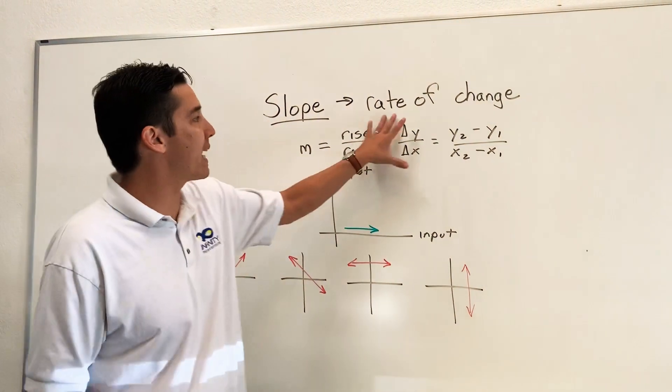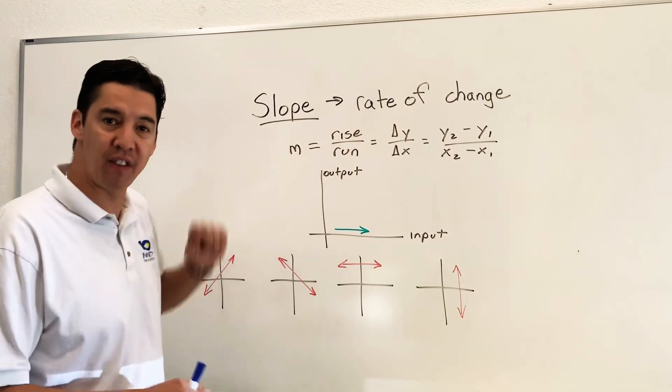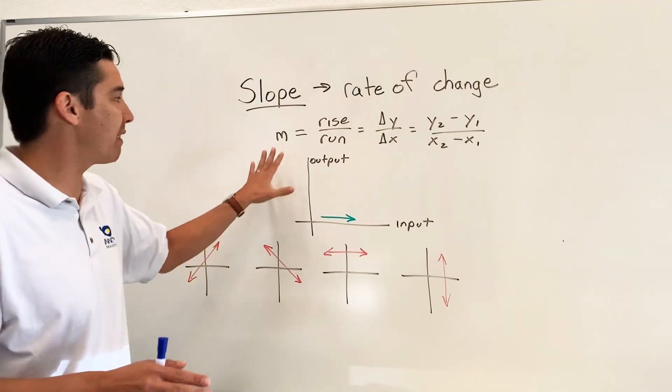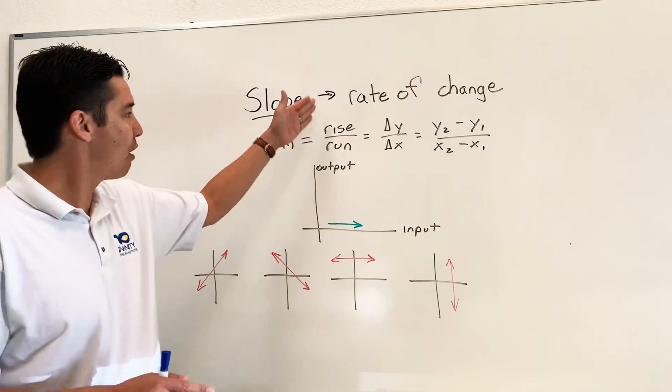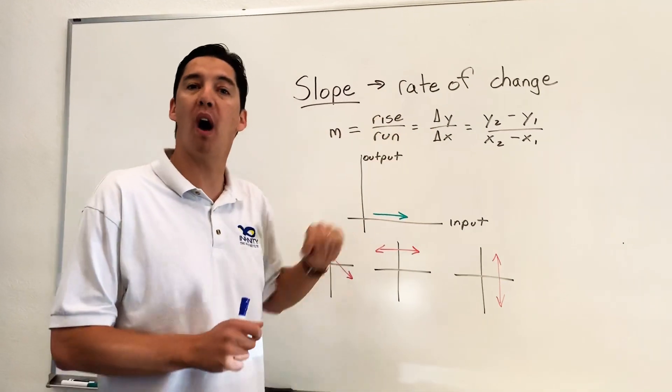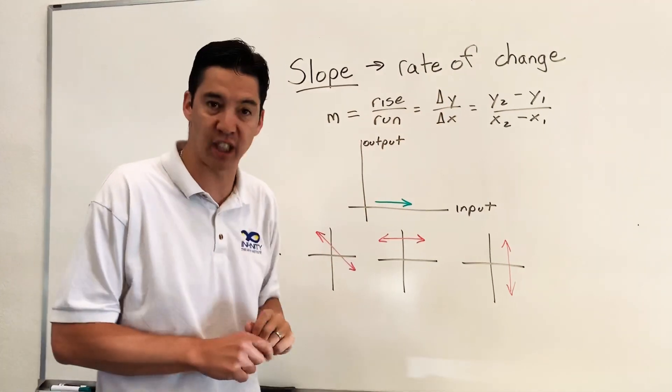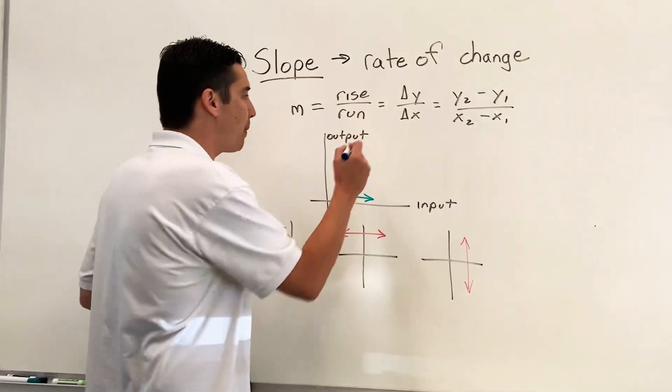Everything is about rate of change, which is the definition of slope. Slope is very simply represented by an M, rise over run, delta Y over delta X, which is change in Y, change in X. Y is your output.